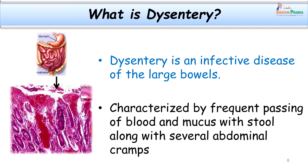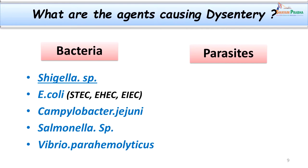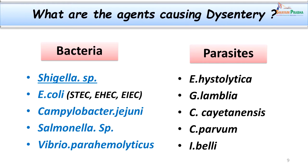There are different bacteria or parasites which can cause such infections. Dysentery is an infective disease of the large bowel characterized by frequent passing of blood and mucus with stool along with severe abdominal cramps. Various bacteria or parasites are responsible, including Shigella species, Escherichia coli, Shiga toxin-producing E. coli (STEC), enterohemorrhagic E. coli, enteroinvasive E. coli, Campylobacter, Salmonella, and Vibrio. Among parasites, the important ones are Entamoeba histolytica and Giardia lamblia.